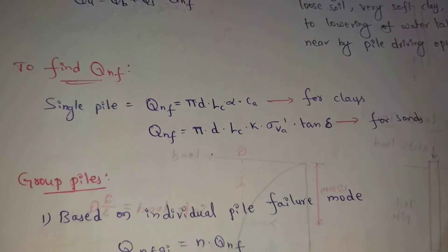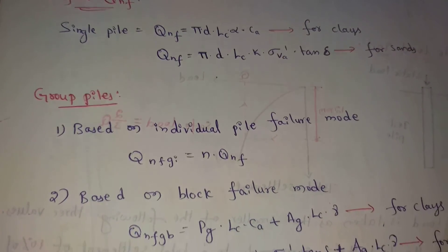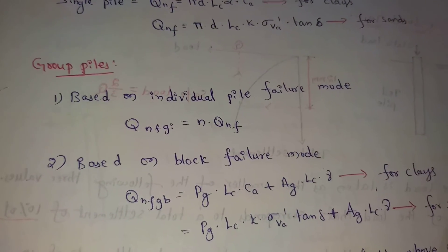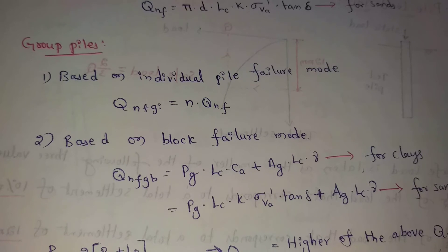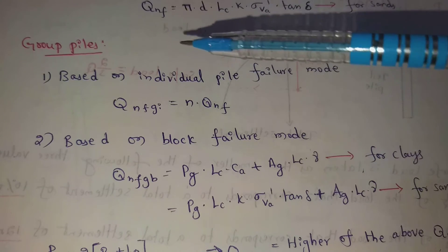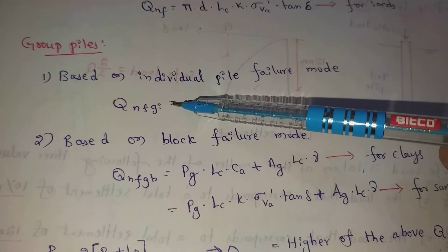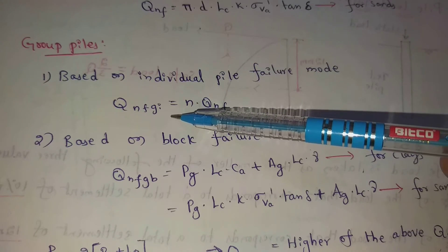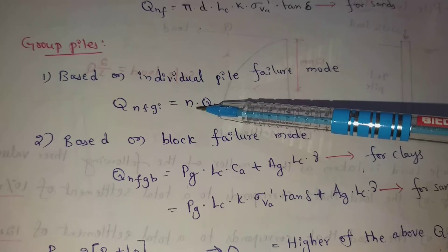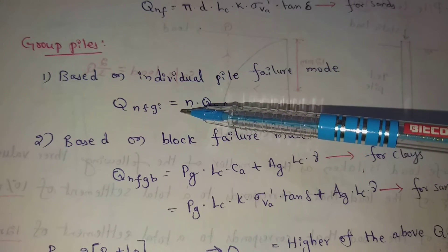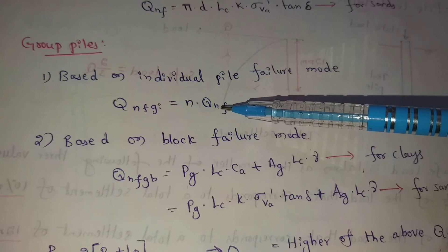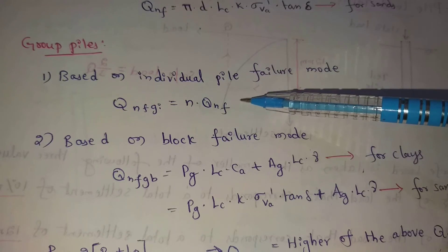To find QNF for group piles, there are two failure modes. Based on Individual Pile Failure Mode: QNF(GI) = N × QNF, where N is the number of piles.